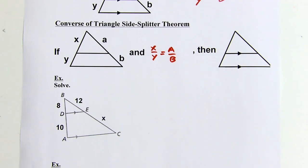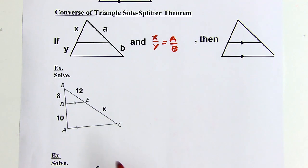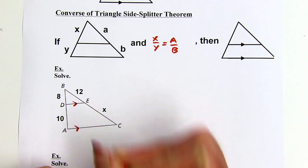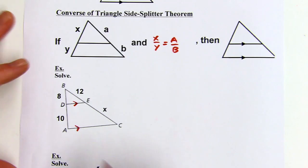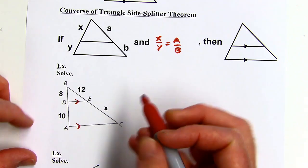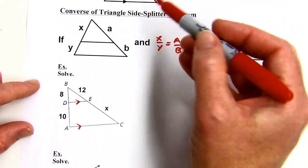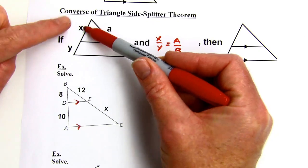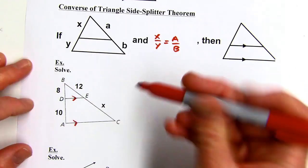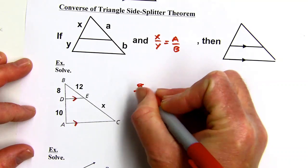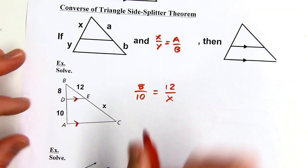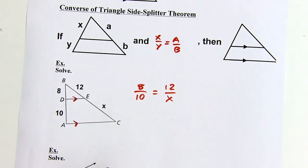Let's put this to use. In this triangle, the sides are already marked parallel, so 8 should be to 10 as 12 is to x. We set it up the same way — x is to y as a is to b — so here 8 is to 10 as 12 is to x, and we can cross multiply to solve.